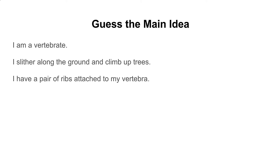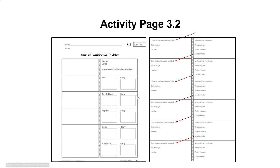Now I want you to listen to the read aloud and determine the main ideas. You'll also need to take out the activity page from your green folder. Notice these red arrows here — you're going to be filling in as you listen whether an animal group is cold-blooded or warm-blooded. We'll talk more about what that means during our read aloud.